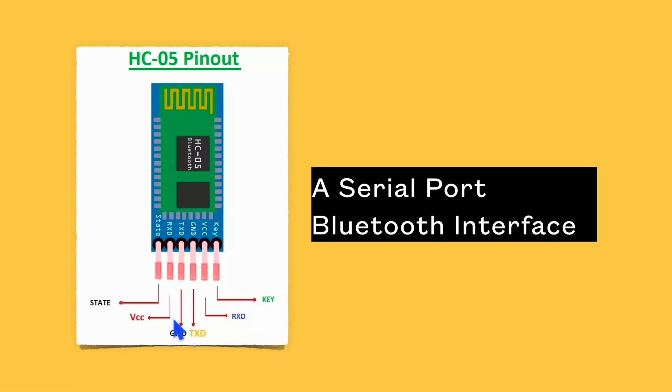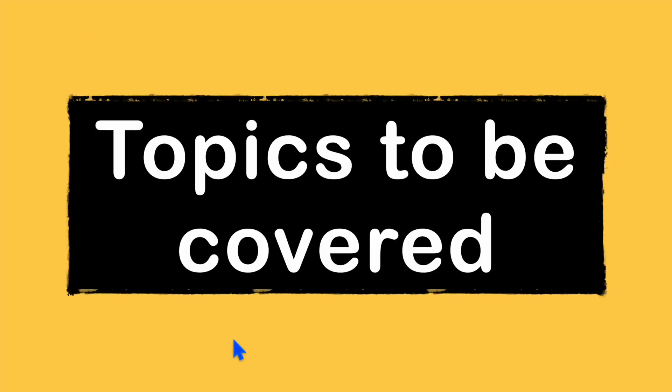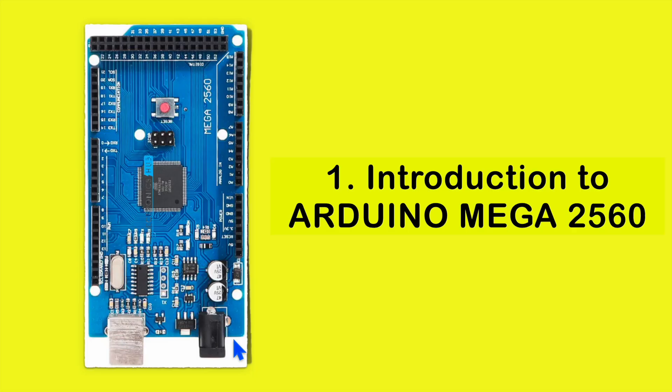Here you can see TX and RX. So with these two lines, serial communication is very easily possible, and in this series I'll try to cover these topics.